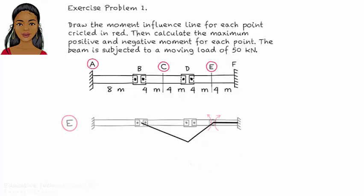Since A is fixed, segment AB does not move. So according to the influence line, no positive moment develops at E. The maximum negative moment at E develops when the load is at D.